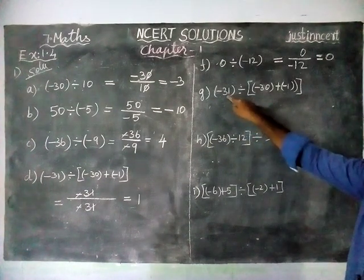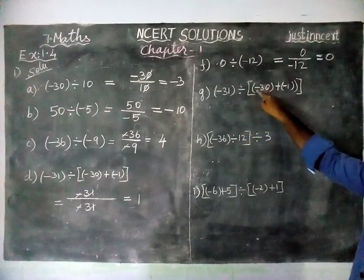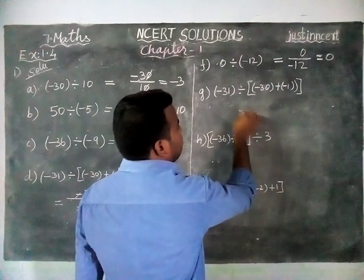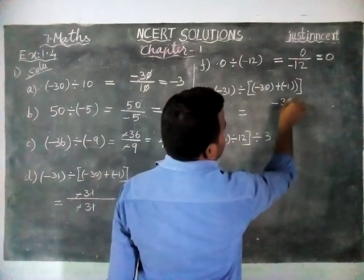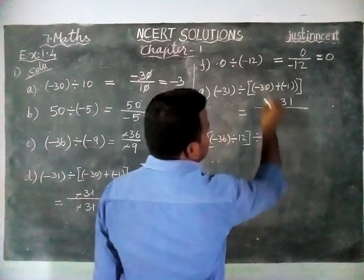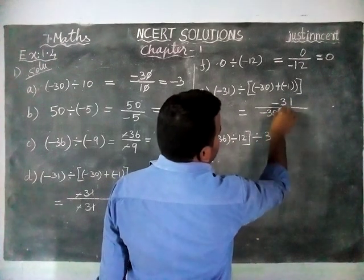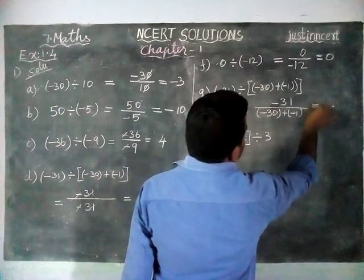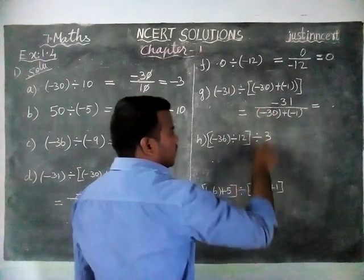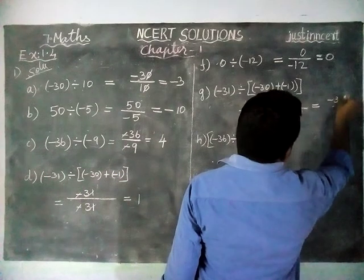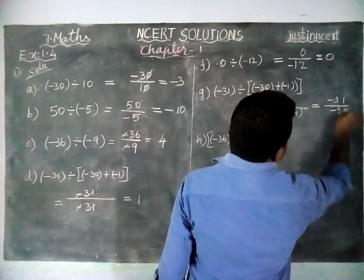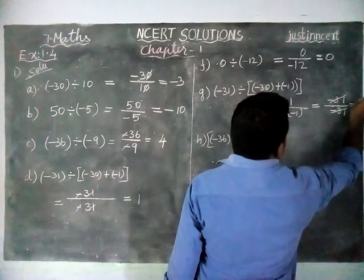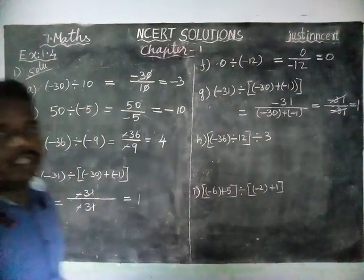Option G: minus 31 divided by minus 30 plus minus 1 is equal to minus 31 divided by minus 31. Minus 31 and minus 31 get cancelled, which is equal to 1. So the answer is 1.